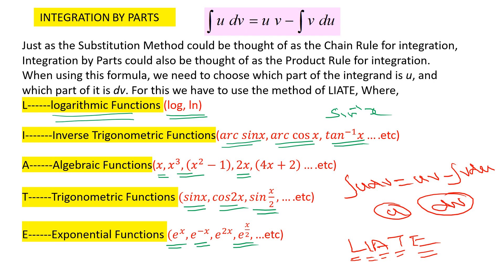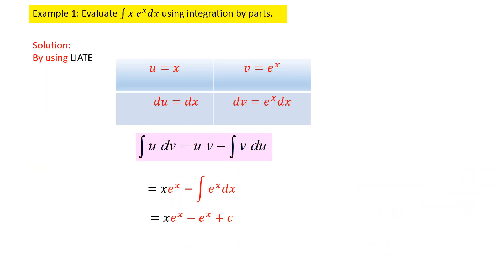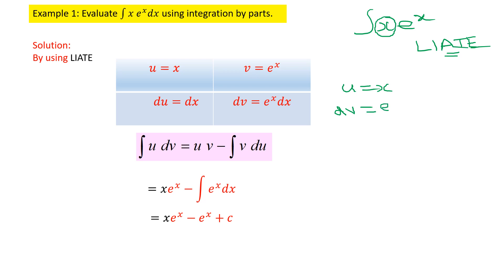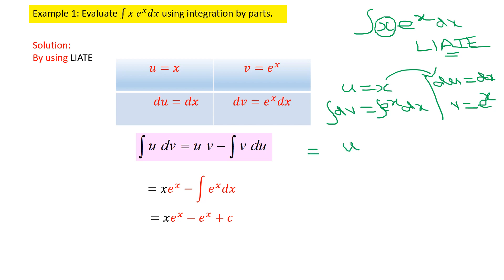Let us discuss Example 1: integral of x·eˣ dx. Applying the LIATE rule, x is an algebraic function, so we choose u = x. The remaining part becomes dv = eˣ dx. Differentiating u gives du = dx, and integrating dv gives v = eˣ. Now substituting into the formula — integral u dv = uv minus integral v du.